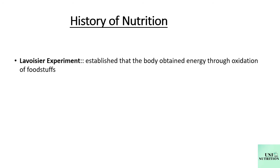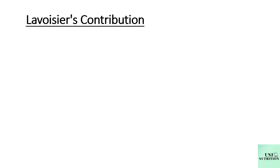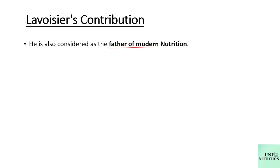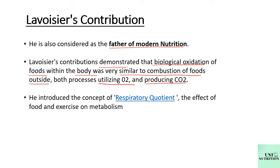Let us study about the history of nutrition. First, let us look at Lavoisier's contribution. Anton Lavoisier established how the body obtains energy through oxidation of food. Lavoisier is also known as the father of modern nutrition. He demonstrated that biological oxidation of food in the body is similar to the combustion of food outside the body. Both processes utilize oxygen and produce carbon dioxide, which is also known as the respiration quotient.